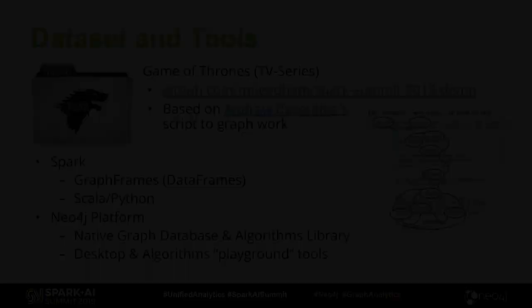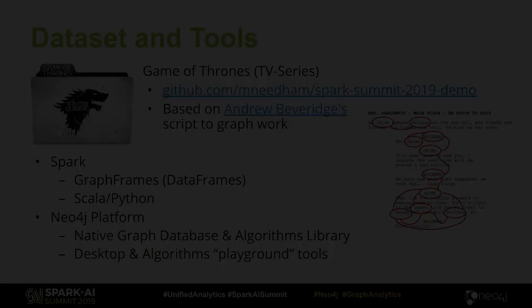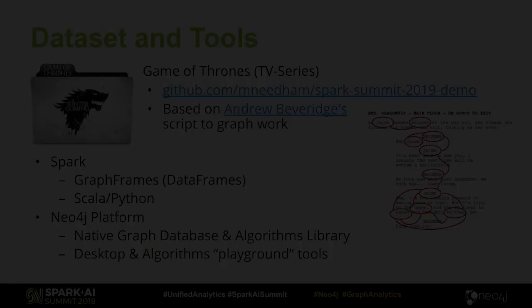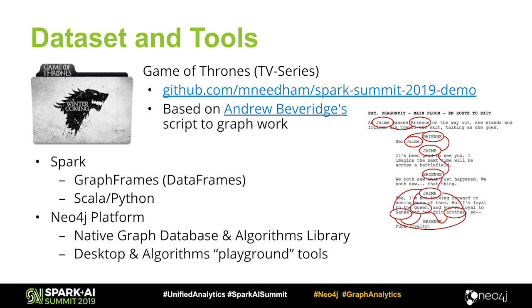Today we prepared a few examples using the Game of Thrones dataset, which you can find at the GitHub link shown. The data is extracted by looking at character names in the text of the TV show — if another name occurs within 15 words from the first, it creates two nodes with the names and a relationship called Interacts. We're looking at this graph using both Spark GraphFrames and the Neo4j platform, including the Neo4j Desktop app and the algorithms playground.